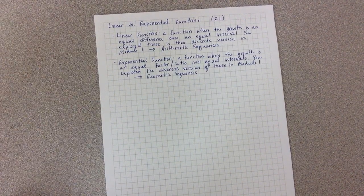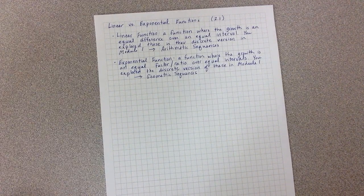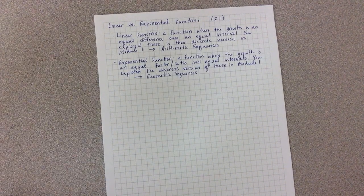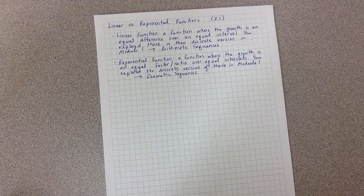Remember, discrete means individual points. So these were the versions of the functions where it wasn't a smooth line, it was just individual points plotted.